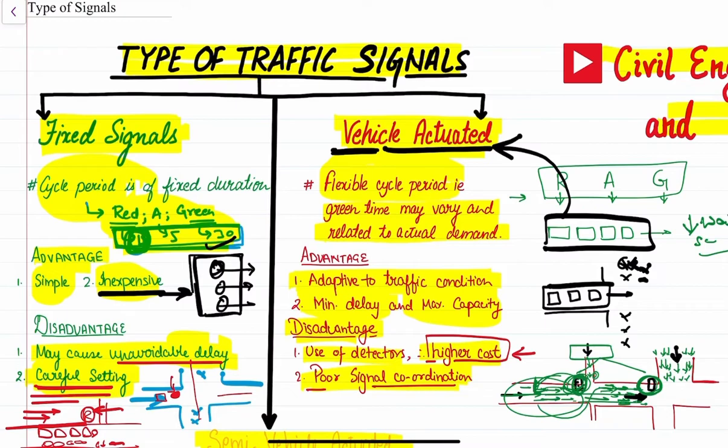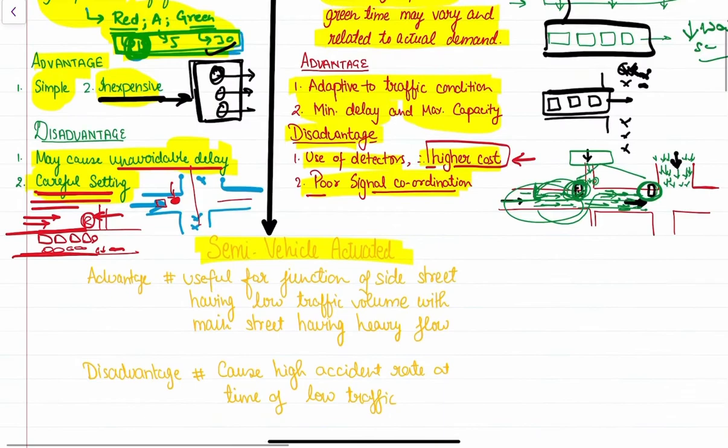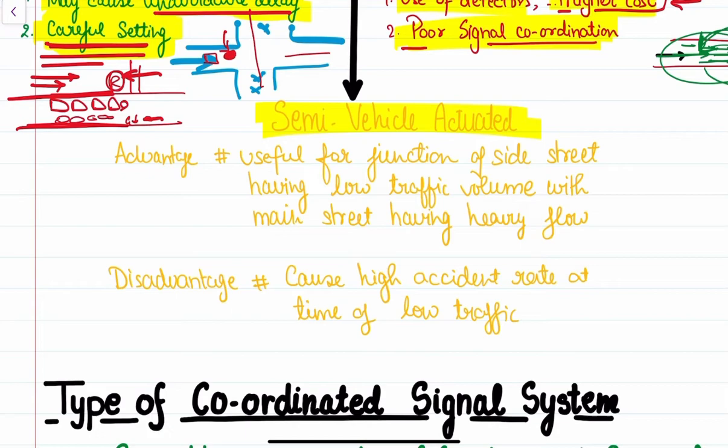These are two major types of traffic signals — we have fixed signals and vehicle-actuated type. Then we have another category called the semi-vehicle-actuated type, which as we can understand is a middle ground between fixed and vehicle-actuated.